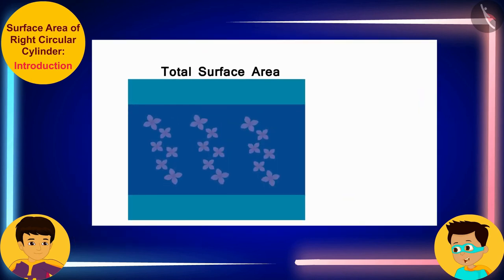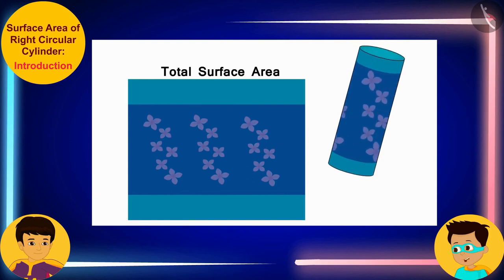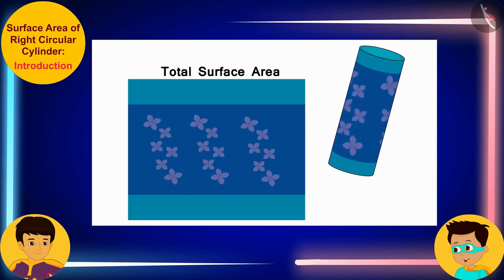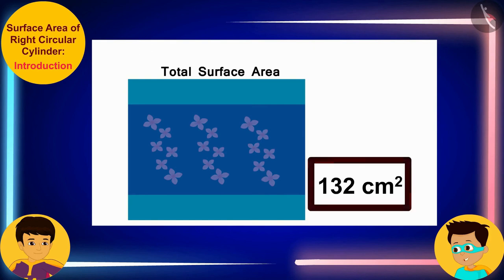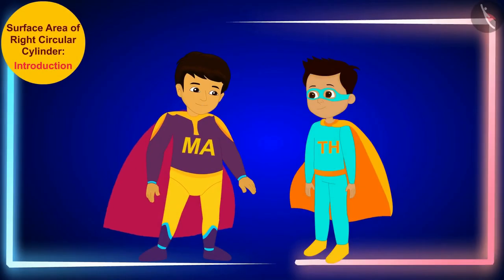Look, Manas, because the paper used to make my cylindrical packet is equal to its total surface area, I would need 132 cm² of paper to make a cylindrical packet. Well done, Thomas! Let us return to our world now. I will help you make this packet.